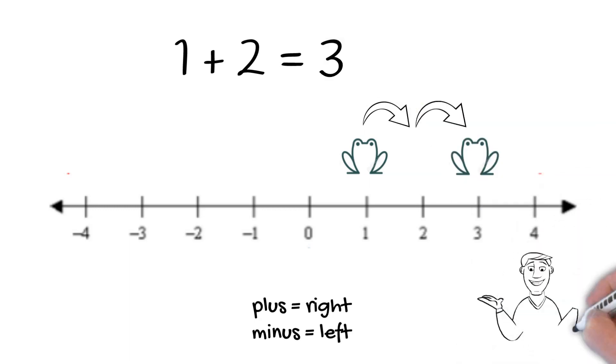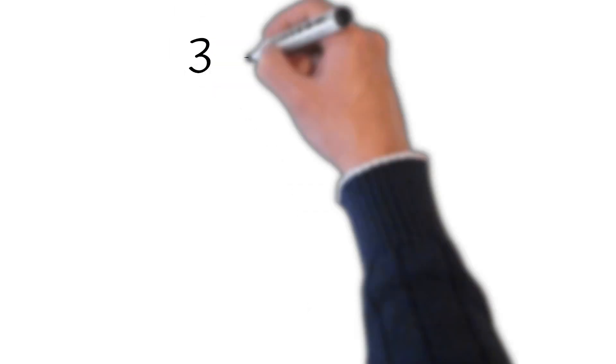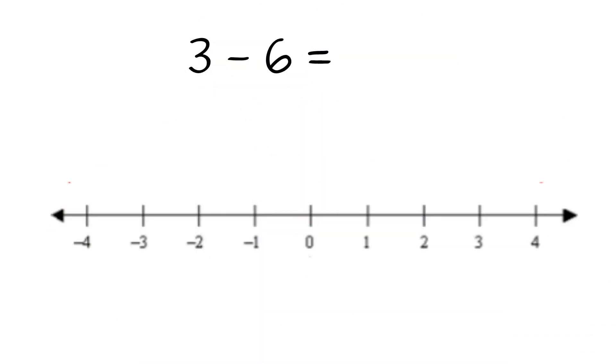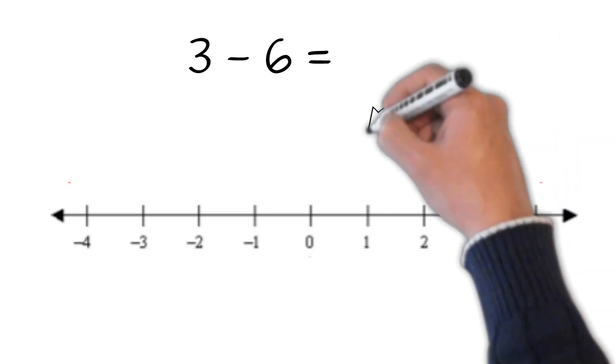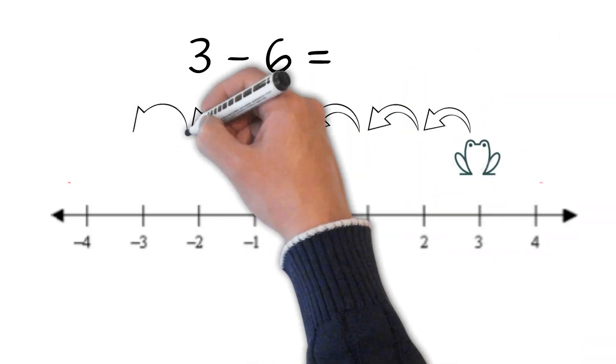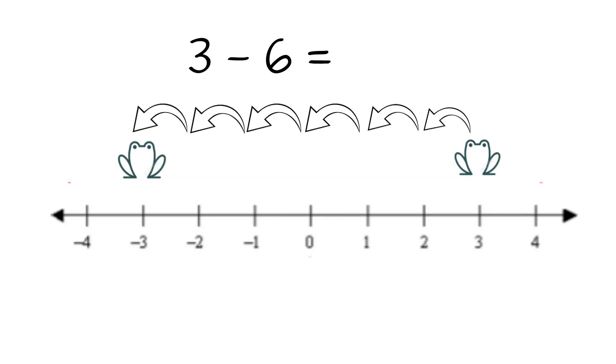Let's try another one. What about 3 - 6? Our first number is 3, so that's where we will start. Our operation is minus, so our frog will jump to the left. Our second number is 6, therefore our frog will jump six spaces. Our frog landed at -3, and that's our answer. 3 - 6 = -3. Let's put your understanding to the test.